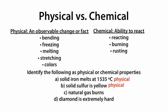C, natural gas burns. We've listed burning as a chemical change or chemical property. So we're going to call that a chemical property.